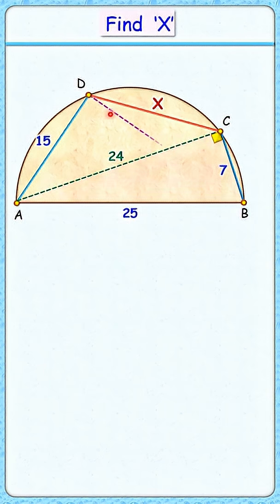Same thing, let's draw DB. Now AB is the diameter, so angle D will be 90 degrees. In this right triangle, applying Pythagoras theorem, we get DB length as 20 centimeters.